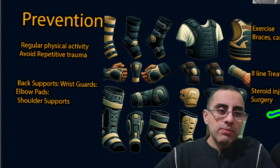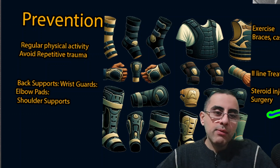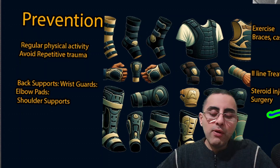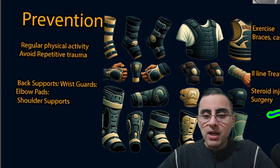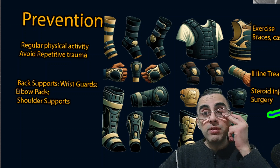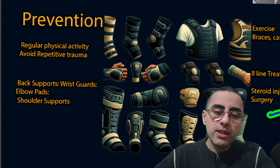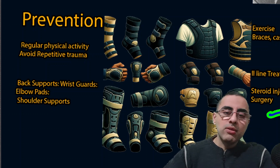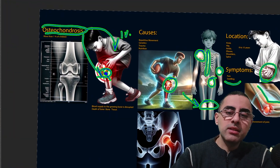Prevention includes regular physical activity and avoiding repetitive traumas. If you follow any sports, protective gear such as back support, wrist guards, elbow pads, and shoulder supports are important and should be used if you are at risk of repetitive traumas.